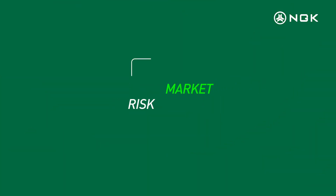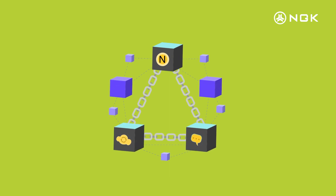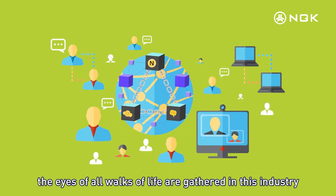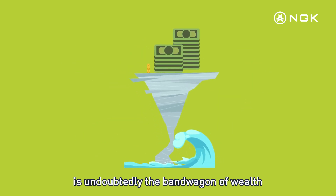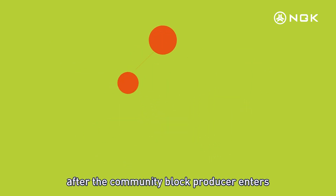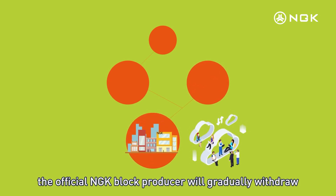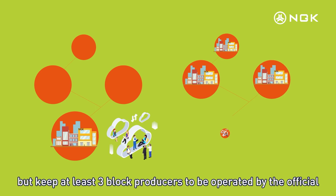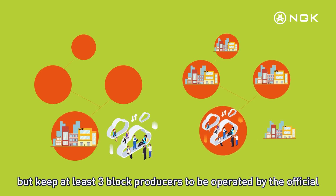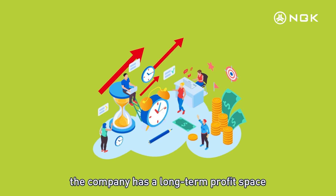Market Risk. Blockchain belongs to the trend of the Internet today, and all walks of life have gathered attention in this industry. After the community block producer enters, the official NGK block producer will gradually withdraw, but will keep at least three block producers operated by the official, ensuring the company retains long-term profit space.